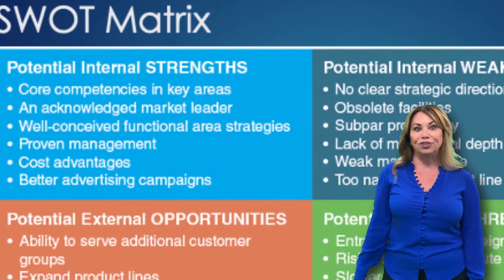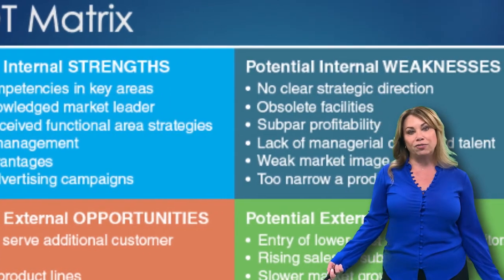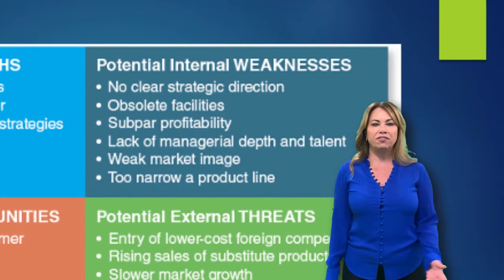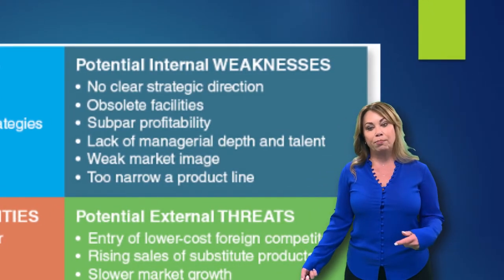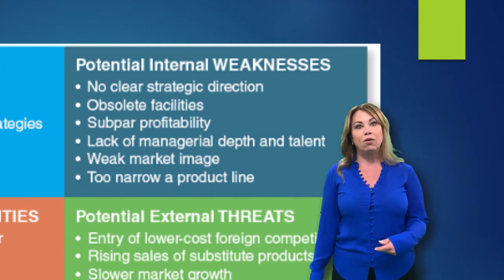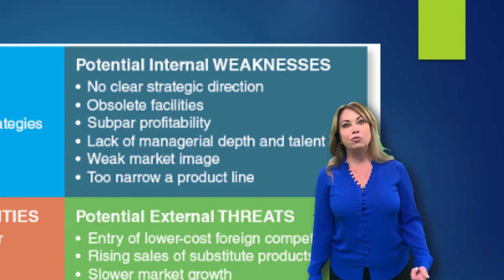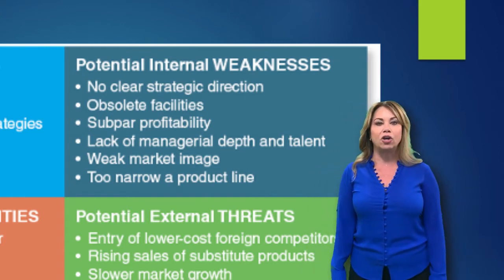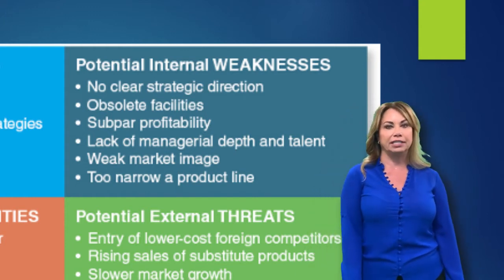What types of internal weaknesses might we possess? Well, maybe we don't have good direction — that's definitely a weakness. Or maybe our facilities are obsolete or out of date. Oftentimes maybe we're operating at a very slim profit margin. That could be a weakness as well, along with inexperienced or new management and a weak market image. All those different things could be weaknesses that we possess as an organization.